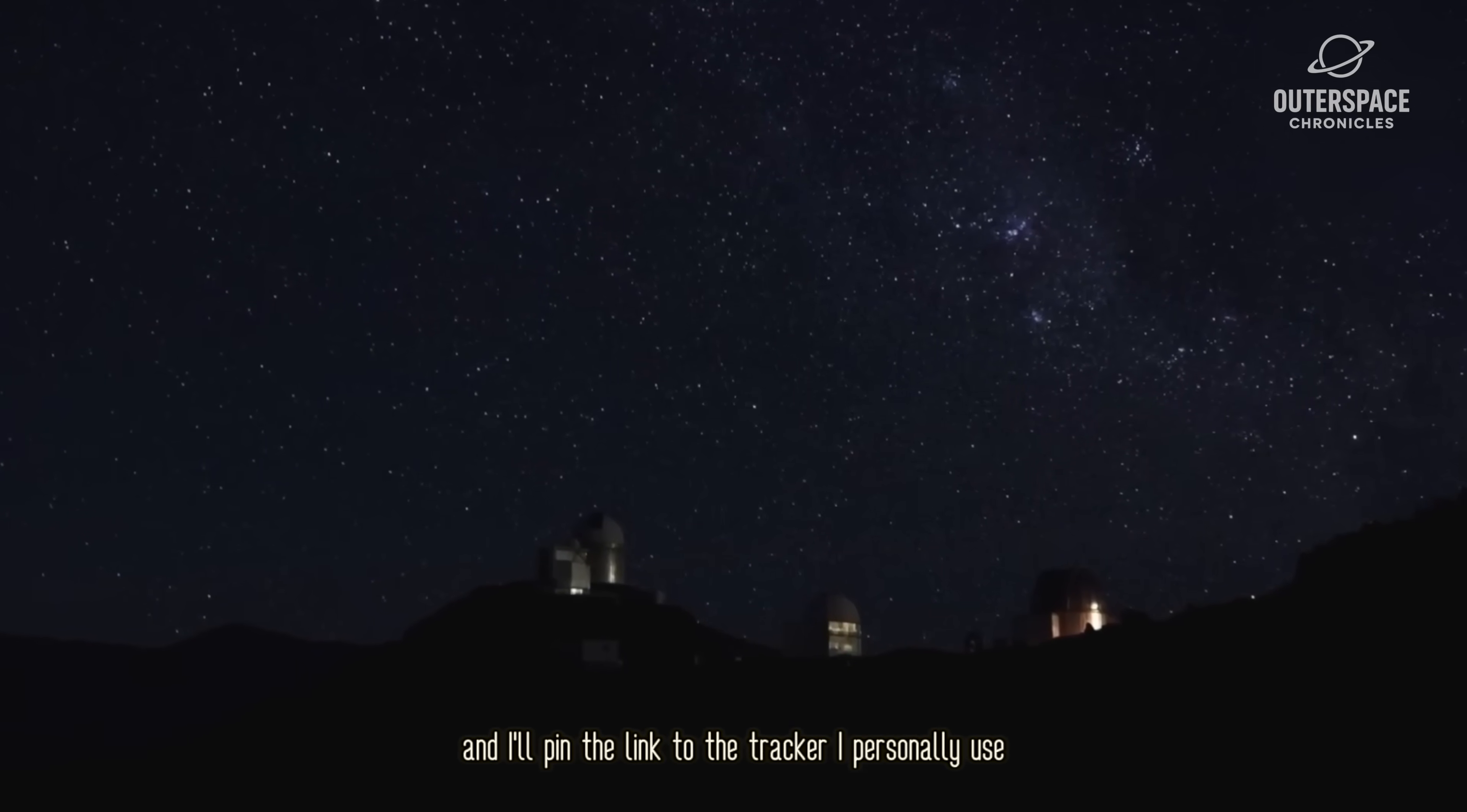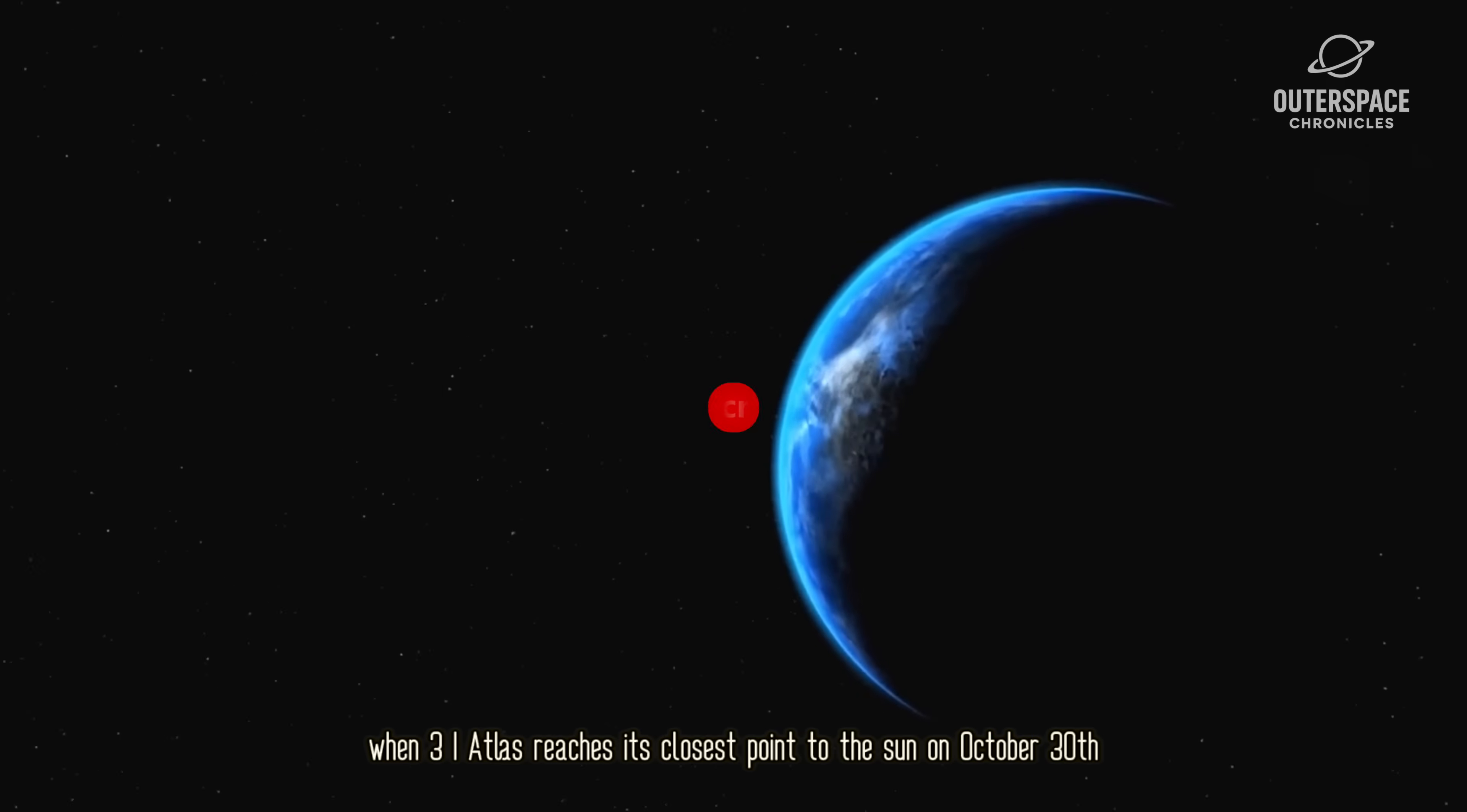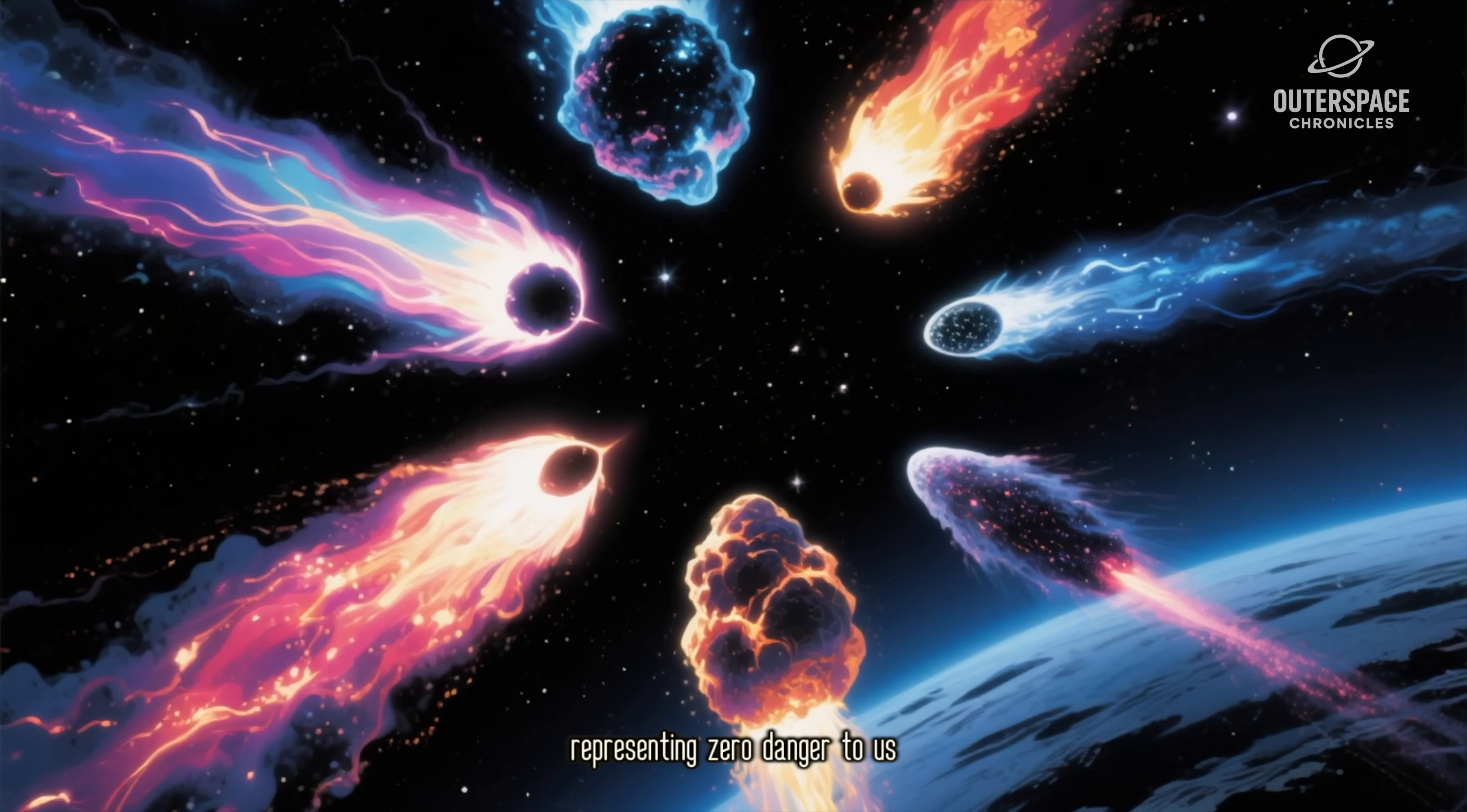If you want real-time charts to hunt down all seven of these comets, drop 'comet map' in the comments right now and I'll pin the link to the tracker I personally use. While you're down there, smash that subscribe button so you don't miss our live stream when 3I Atlas reaches its closest point to the Sun on October 30th. Trust me, you won't want to miss seeing an interstellar visitor up close.